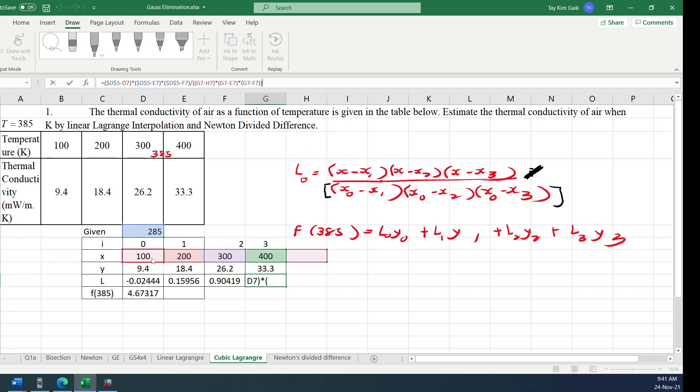The answer here, the answer here. Causes now only two terms. Anything wrong? And again, equal L node multiply y node plus L1 multiply y1 plus L2 multiply y2 plus L3 multiply y3.